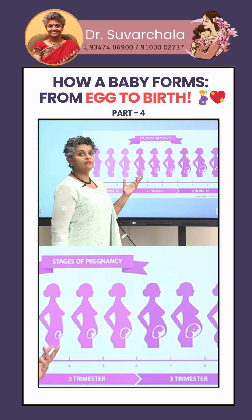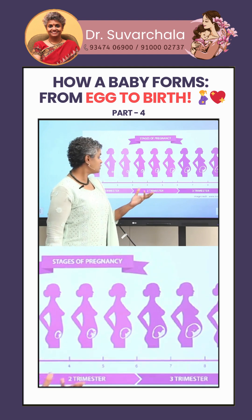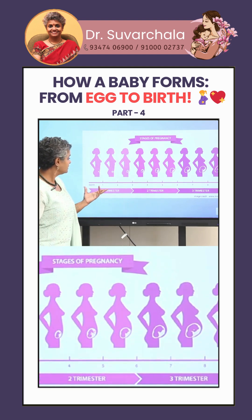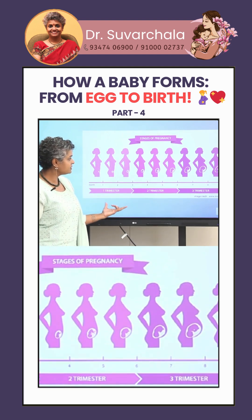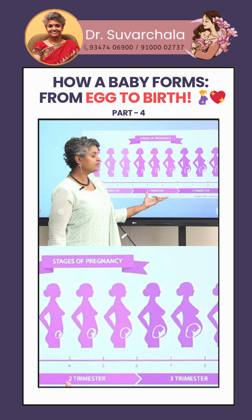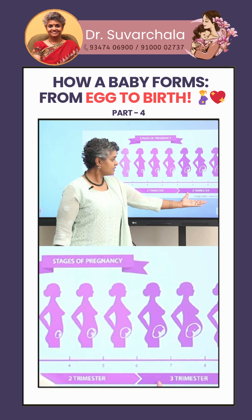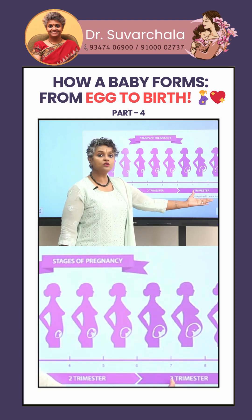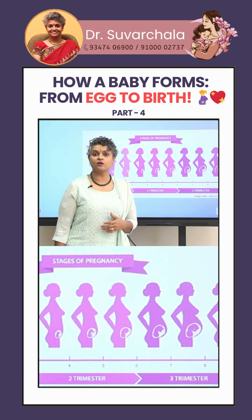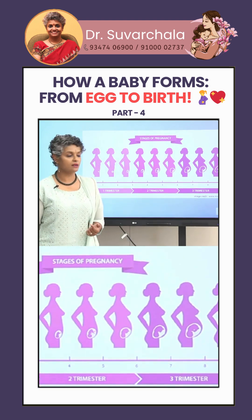If we look at the stages of pregnancy, the first three months are called the first trimester, the next three are called the second trimester, and the last three months of pregnancy are called the third trimester.